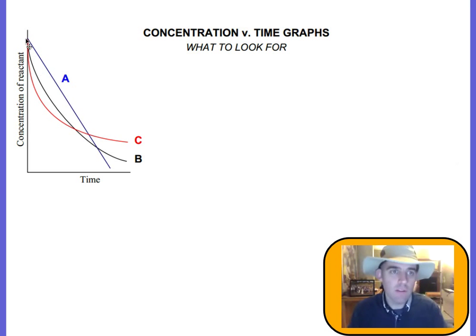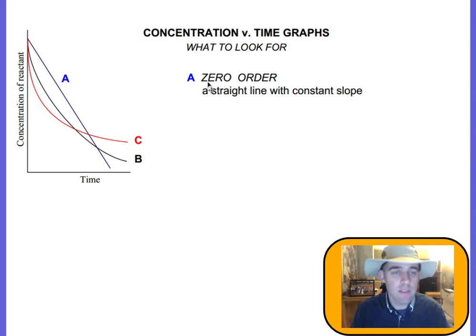If we look at A, it's a straight line so it's been used up, but this gradient is constant all the way through. The gradient at any point will be the same. Remember, the gradient in this graph represents the rate, so the rate is constant no matter what the concentration of A. We know then that A is zero order because it's a straight line with a constant slope. It doesn't matter what the concentration is—the gradient is the same, so the rate is the same. The concentration of A does not affect the rate of reaction. It's still a reactant that's being used up, but it doesn't affect the rate.